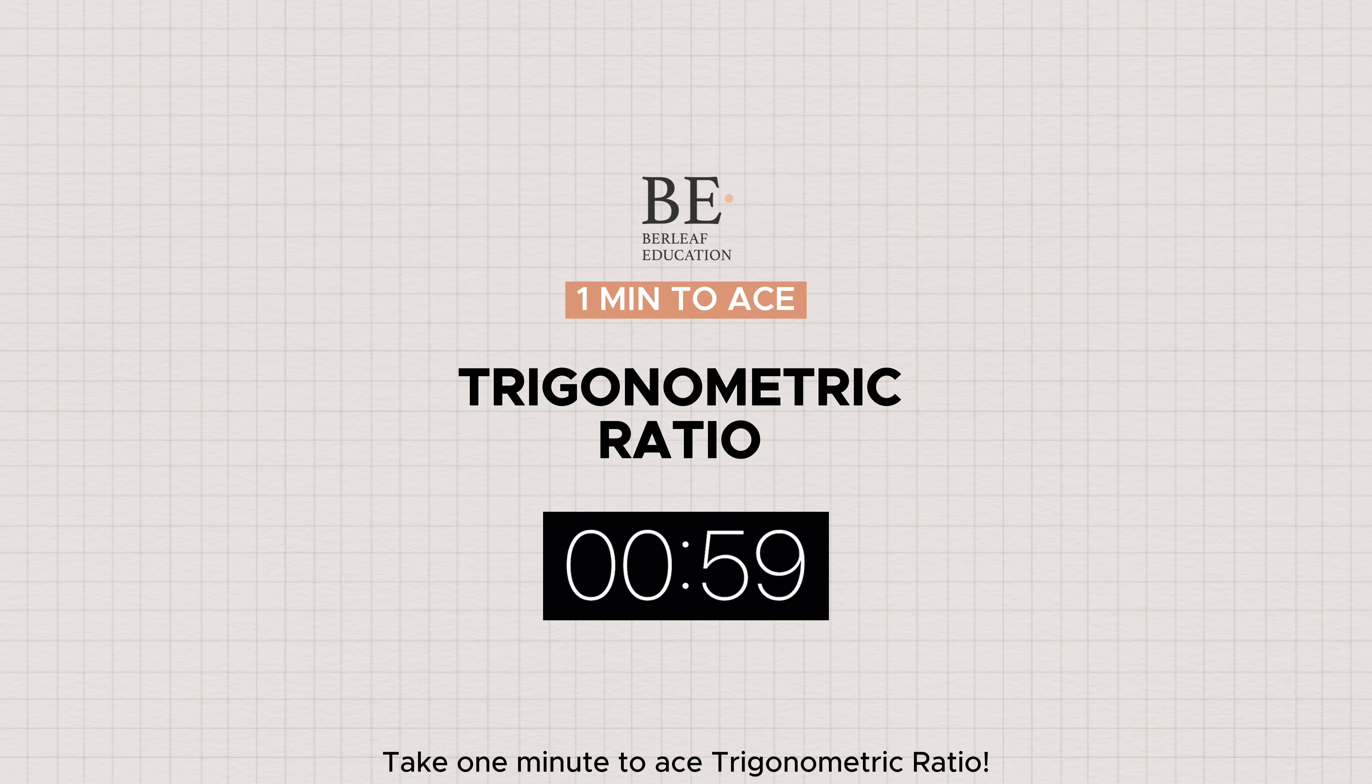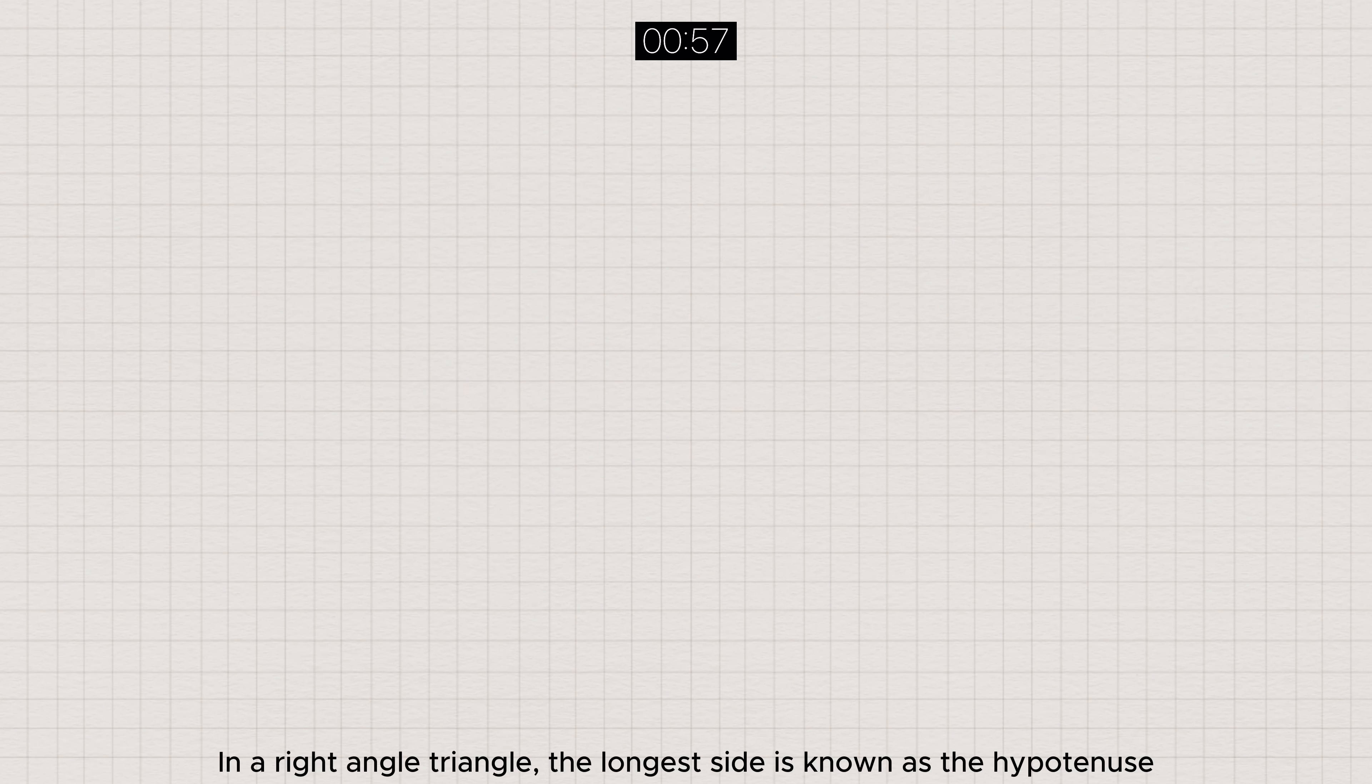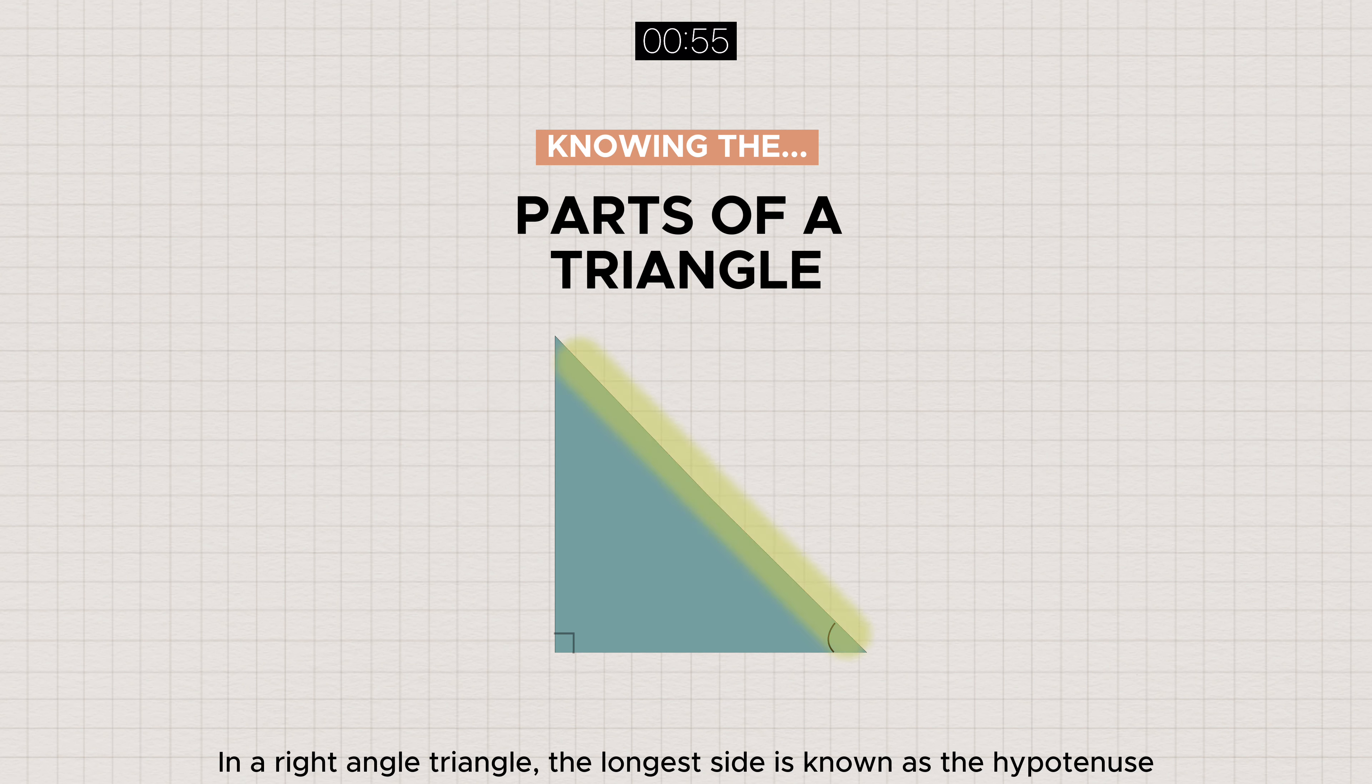Take one minute to ace trigonometric ratio. In a right angle triangle, the longest side is known as the hypotenuse, while any of the angles apart from the right angle can be defined as theta.